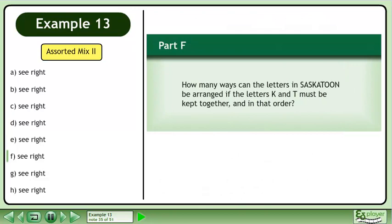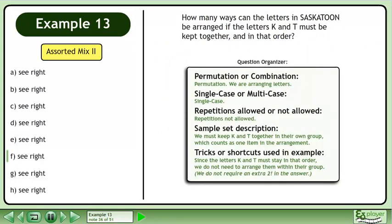Now we'll move on to part F. How many ways can the letters in Saskatoon be arranged if the letters K and T must be kept together and in that order?